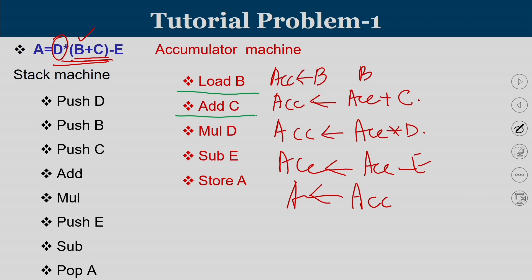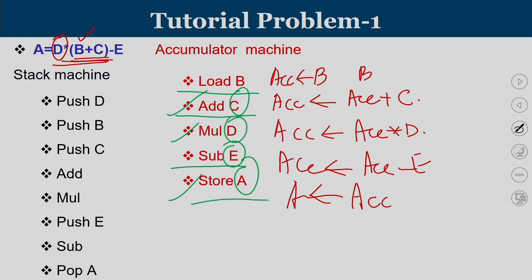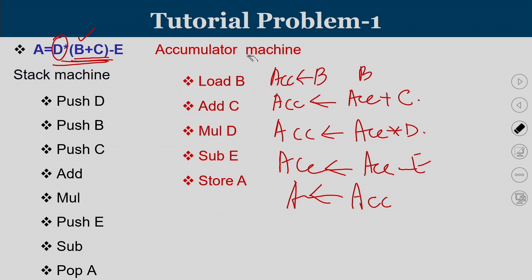In an accumulator operation: one operand is in the accumulator, the other is in a memory location specified in the instruction. After performing ADD C and the subtraction operation, the final result is stored into A. This is how code is generated for the accumulator machine.